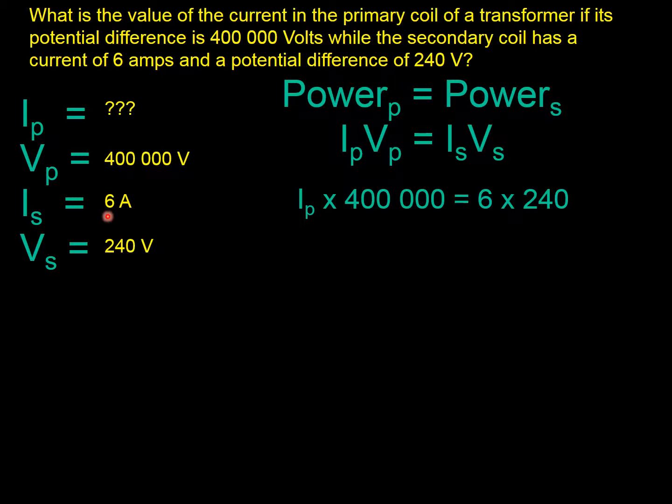Now, once you've got the numbers in, it's just working through like normal. Best thing, tidy it up. Make it look tidy, make it look easy. Let's change. That's 6 times 240. That works out as 1,440.